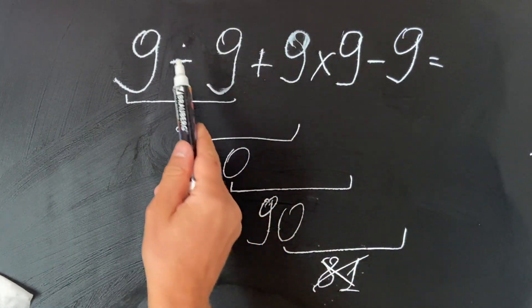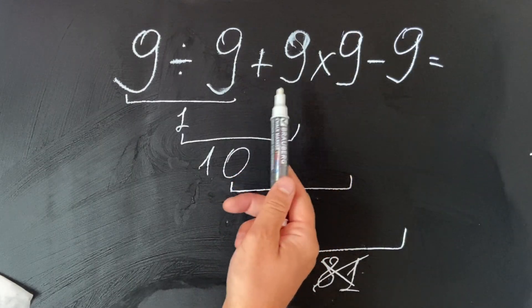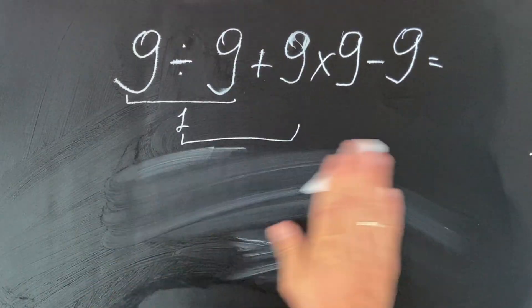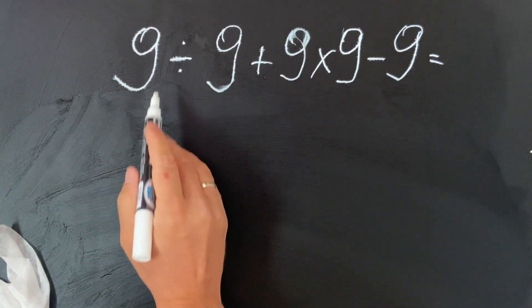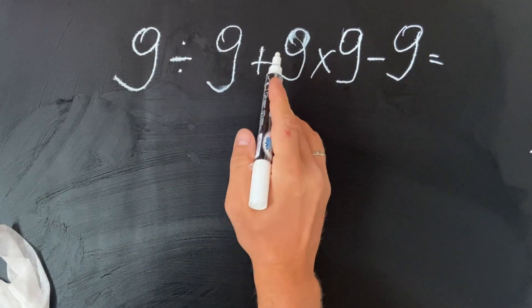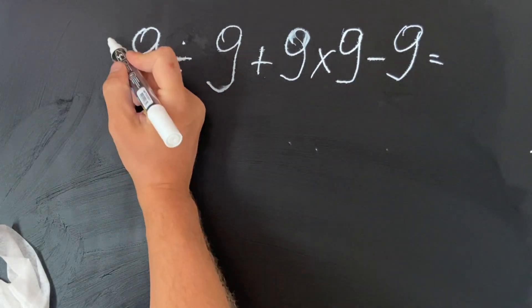So the correct approach would be to do the division and multiplication first from left to right, and then do the addition and subtraction.